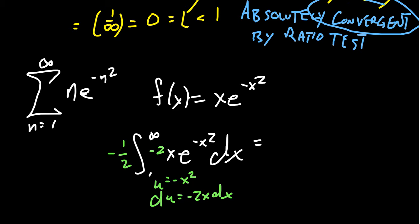Then we switch our integral to be negative 1 half. The integral, we're going to end up with e to the u du. Changing our bounds here. When x equals 1, u will become negative 1. And when x goes off towards infinity, u will become negative infinity.